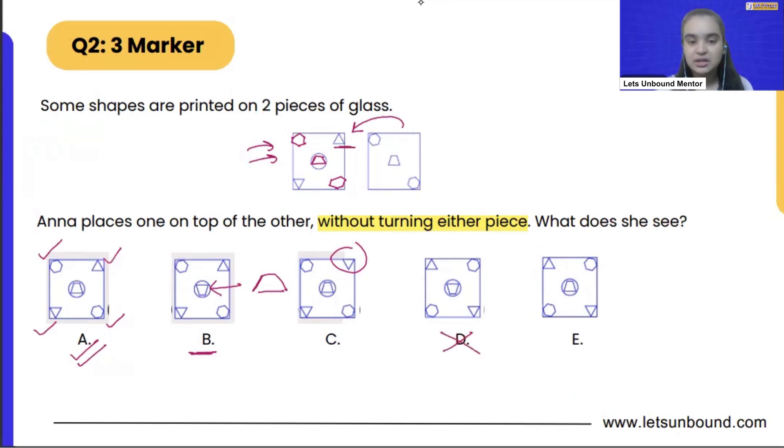In the same way, options D and E we can neglect only because the triangles should be on the other corners, right? So we got our answer. What is our answer? Option A.